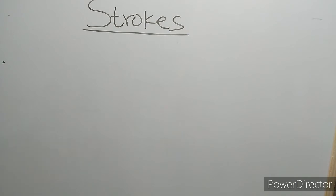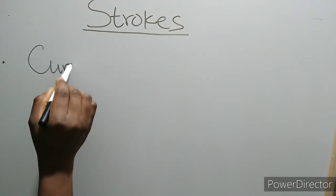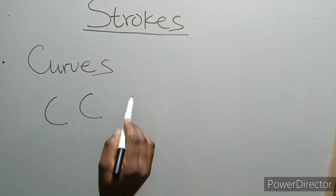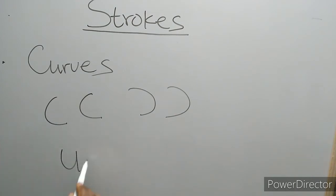So guys, the next one we're going to talk about is curves. We have different kinds of curves. We have the left curve and the right curve, we have the upward curve and the downward curves. Examples of these curves are we have B, we have C, we have D, we have P, we have R, we have U, and so on. These are the strokes that you need to know before we start teaching our kids how to write letters and numbers.